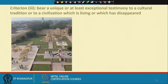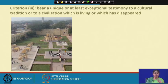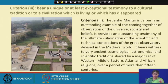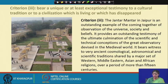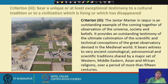Criteria three: a unique or at least exceptional testimony to a cultural tradition or a civilization which is living or which has disappeared. The example here is Jantar Mantar — specifically Jantar Mantar in Jaipur, which is a world heritage site. It is an outstanding example of the coming together of observation of the universe, society, and beliefs. It provides an outstanding symbolic testimony to the culmination of the scientific and technological conception of the great observatory devised in the medieval world.